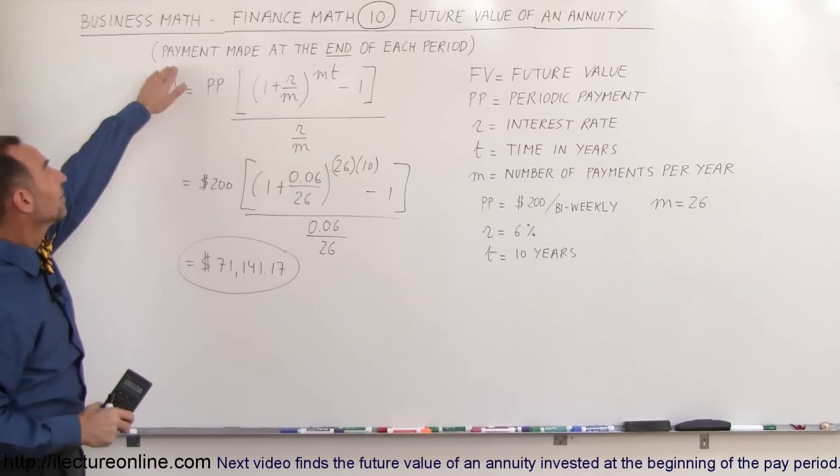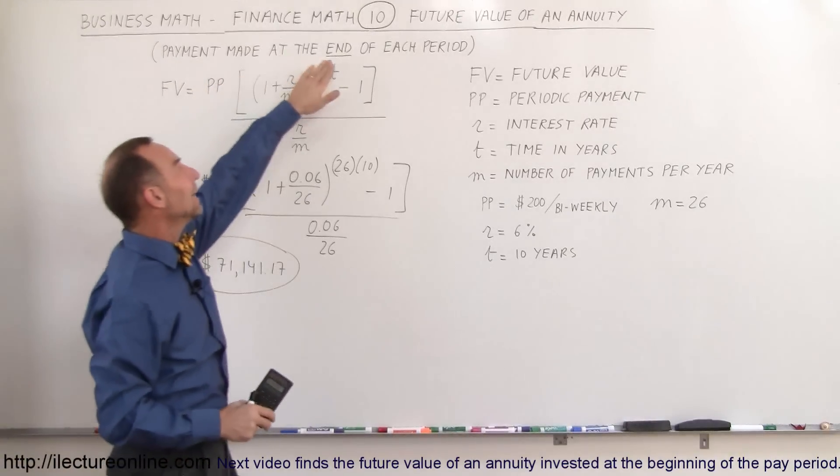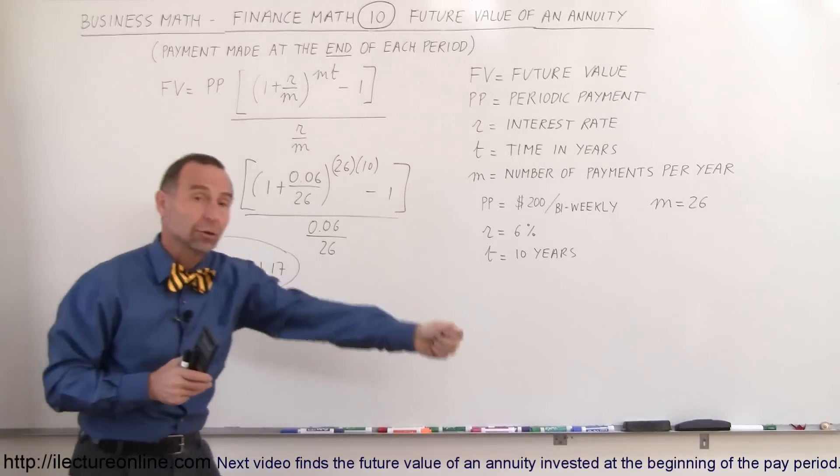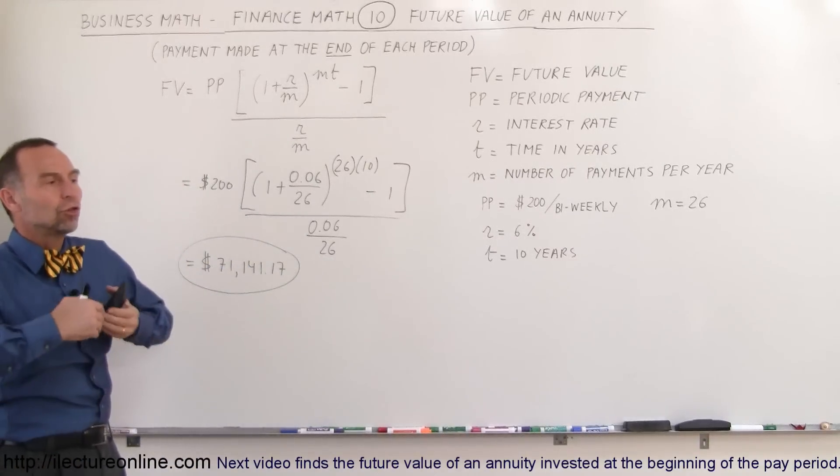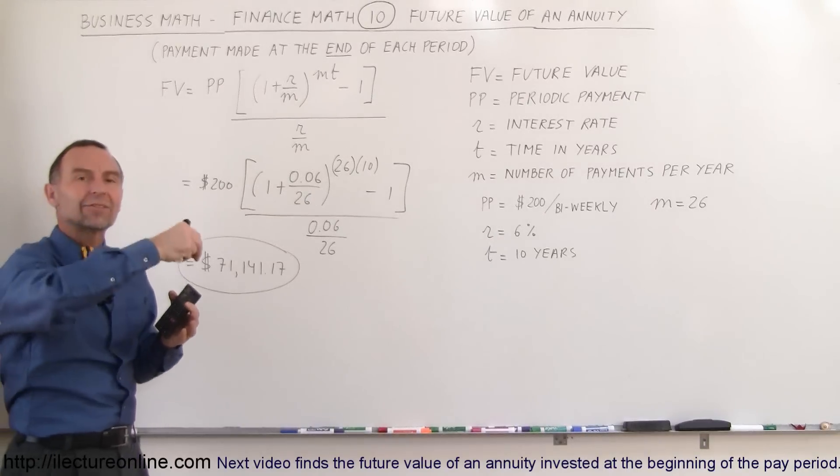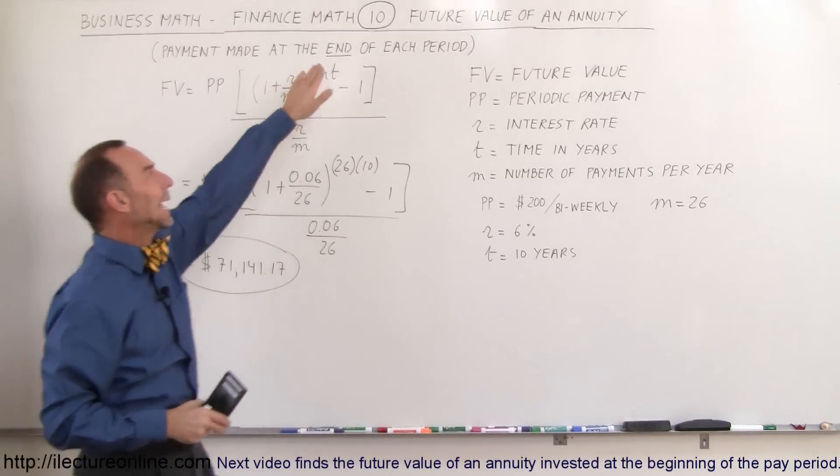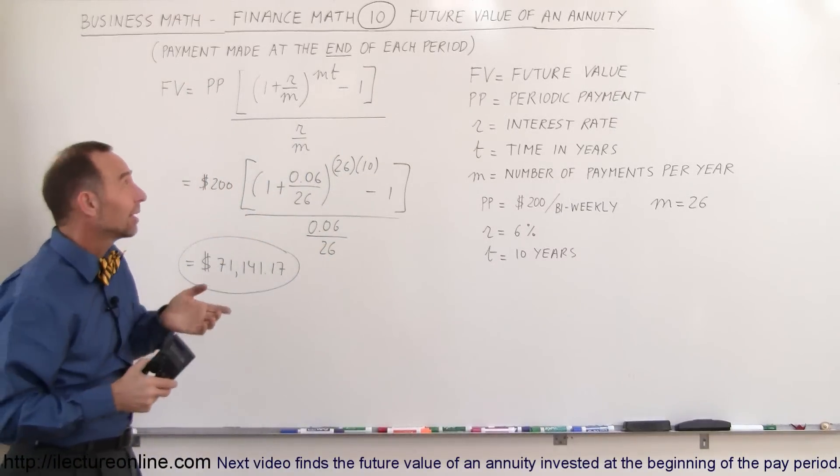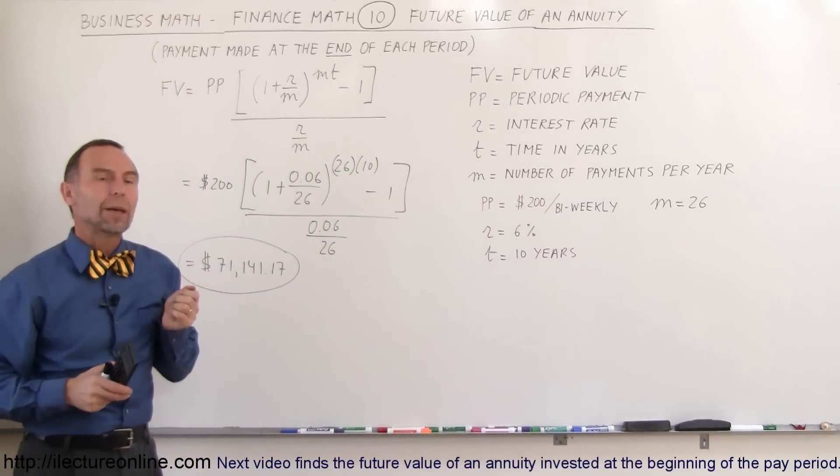Wow, that's a nice savings account after 10 years. It only costs $200 per two-week period. Now, notice here that it says that the payment is made at the end of each period. So when you open the account, you don't start out by putting in the first $200, because usually you open the account, and then two weeks later when you get paid, that's when the money gets taken out of your paycheck. So the first payment is made at the end of each pay period.